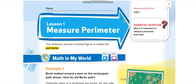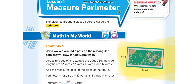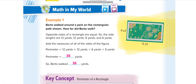Let's start today's lesson. The lesson is about measuring perimeters. The distance around a closed figure is called the perimeter. First of all, you have to understand what a perimeter is. Basically, if you have any closed figure — let's say a rectangle — the perimeter is all its four sides, the boundaries of any figure.